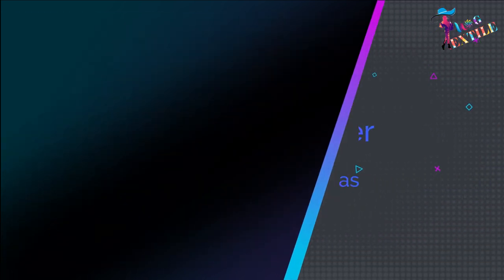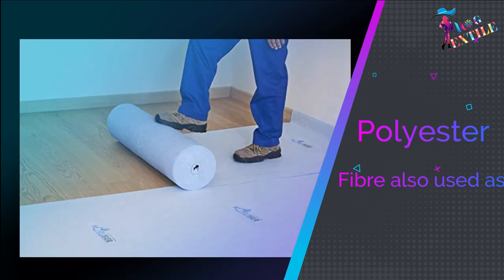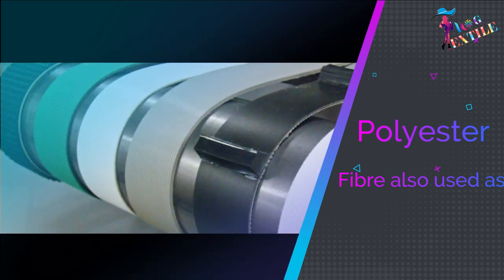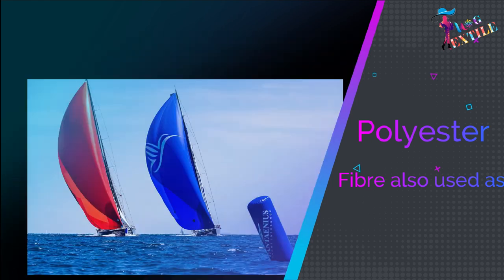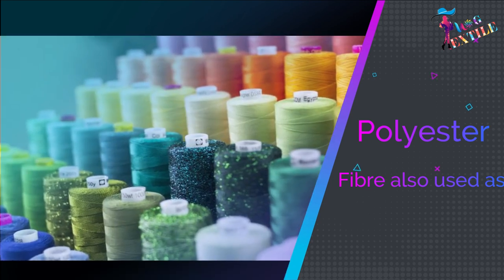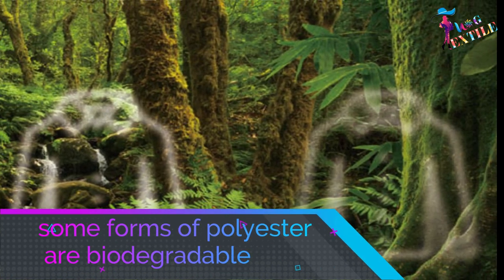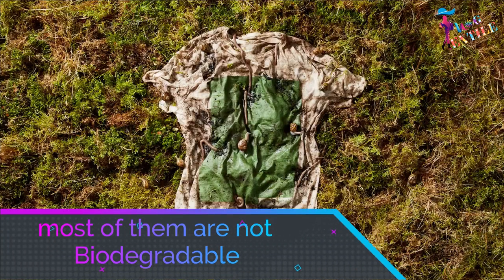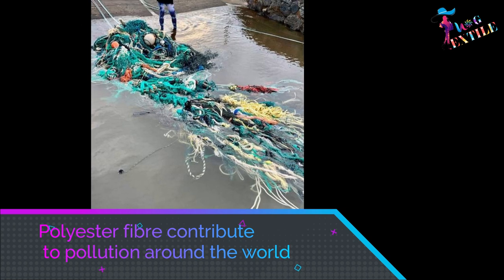Polyester fiber is also used as curtains, floor coverings, laundry equipment, conveyor belts, ropes, nets, filter cloth, sewing thread, and electrical insulation. While some forms of polyester are biodegradable, most of them are not, and polyester production and use contribute to pollution around the world.